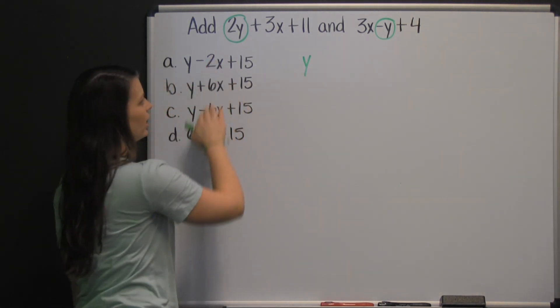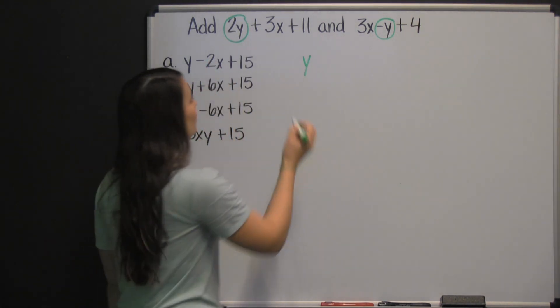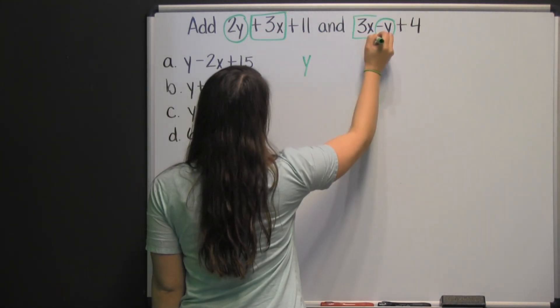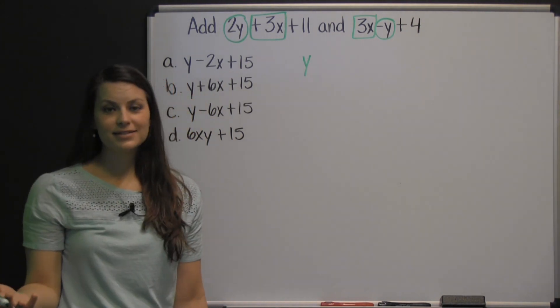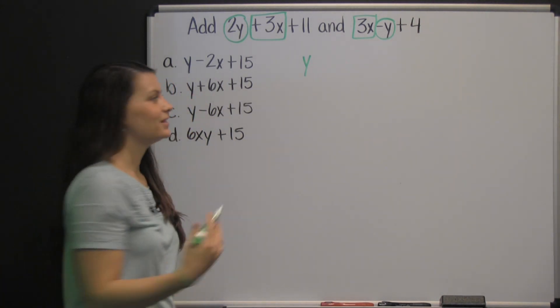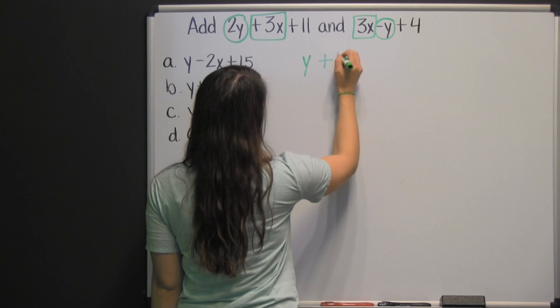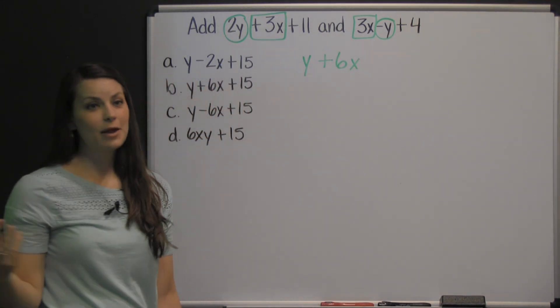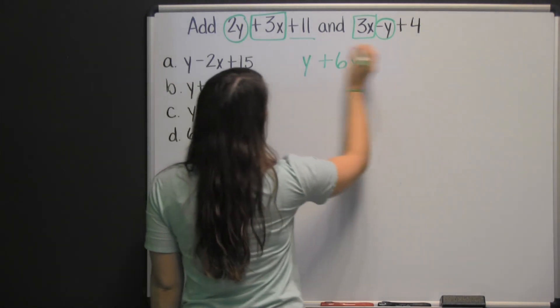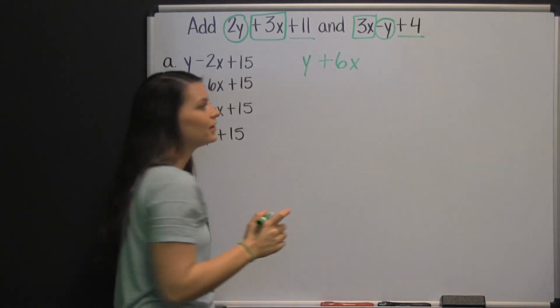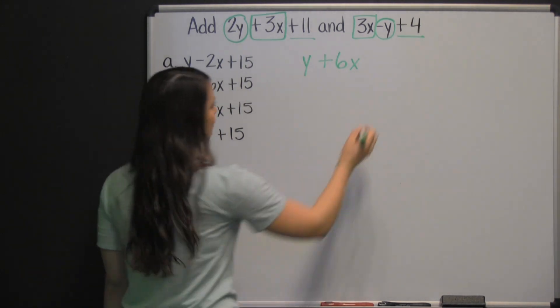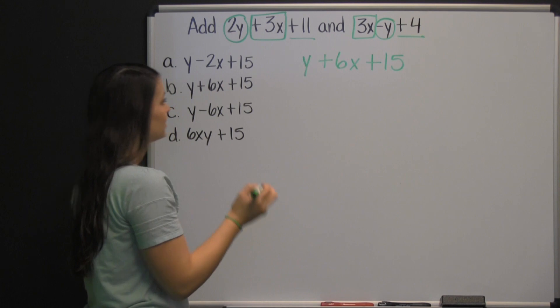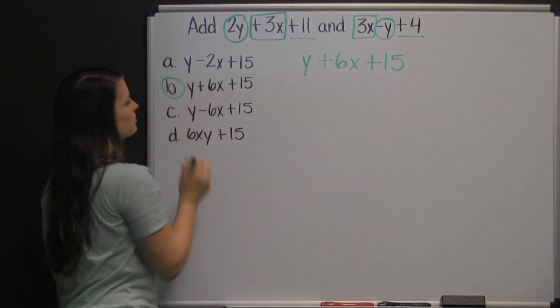Next, we have our x terms, so then we add those together. We have a positive 3x plus another positive 3x. Three x's plus three more x's is 6x, and it's positive, so it's plus 6x. Finally, we have our constants, or just the numbers, plus eleven and plus four. Eleven plus four is fifteen, so plus fifteen. That's our answer, y plus 6x plus 15.